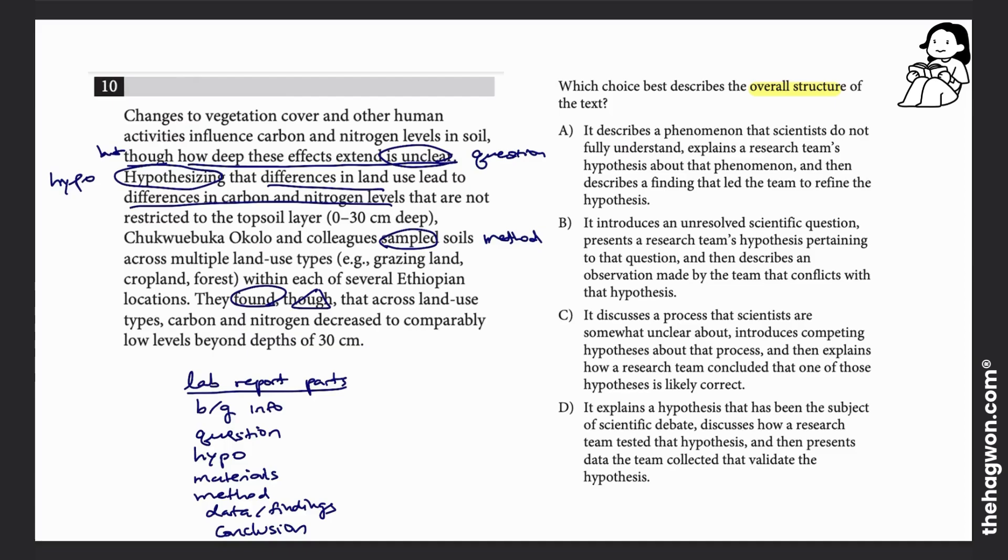So they found—that's my finding—that across land use types, carbon and nitrogen just decreased to comparatively low levels. So we have a question, a hypothesis, method, and finding, and the finding was that across land, carbon and nitrogen actually decreased beyond depths of 30 centimeters.